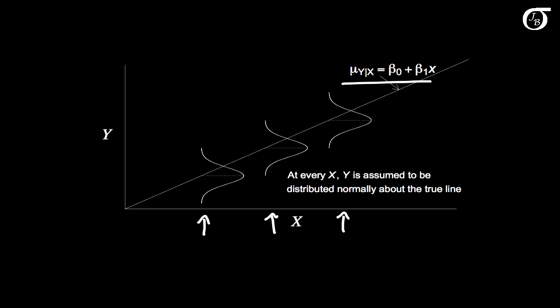The only thing that is changing is the mean of y at these different values of x. And those different theoretical means of y are all falling on this line. And this is our assumed model.